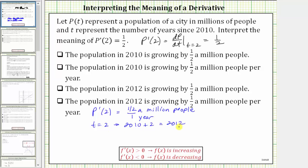So now we know in 2012 the population is increasing at a rate of half a million people per year. Let's write this as a complete sentence.